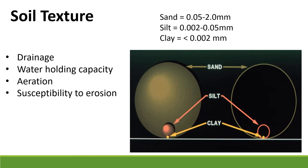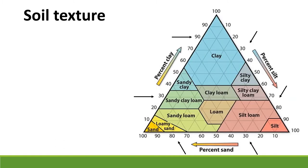Texture also affects how susceptible a soil is to erosion and how clumped together it is. Sand is a very large particle — it's hard to move by wind or water. It affects the amount of organic matter and how much space there is between soil particles. If you know the percent of sand, silt, or clay in a soil you can classify it using the soil texture triangle, plotting whether you have a clay soil, a silty loam, or a sandy loam. On the left of the triangle you have very sandy soil, on the bottom right is silty soil, and the top is clay. These textures tell us about water-holding capacity, aeration, and more.